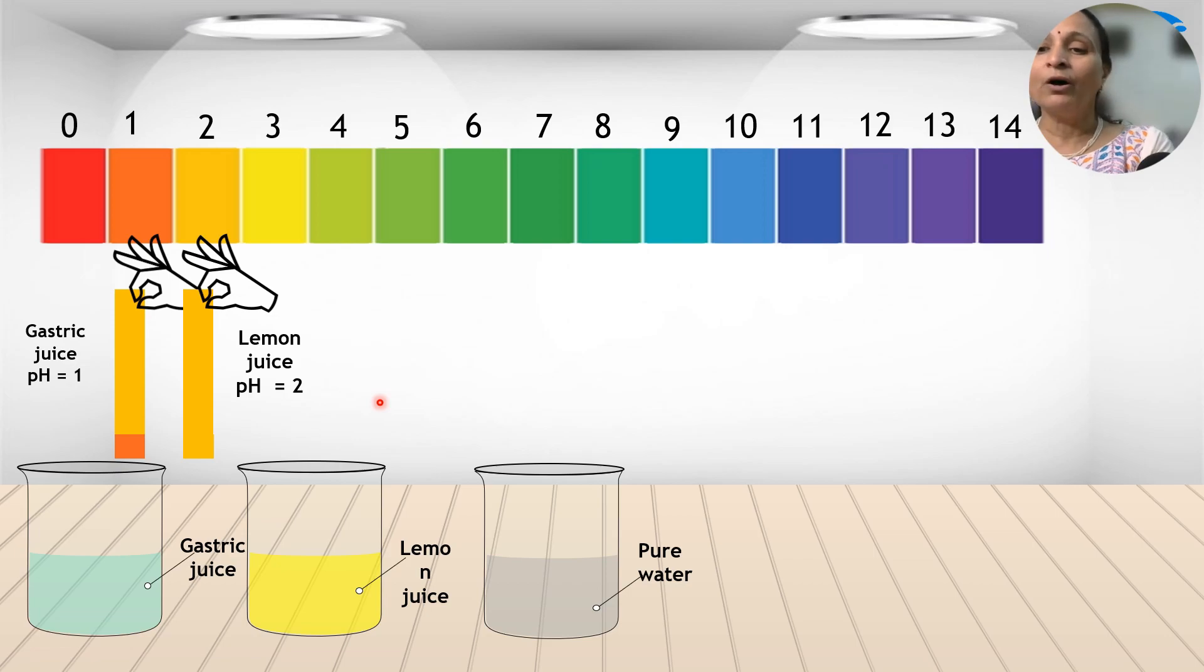Now let us take pure water. If you dip this universal paper into it, the color is changing to a color which matches with the 7. So the pH of pure water is 7. It is neutral.